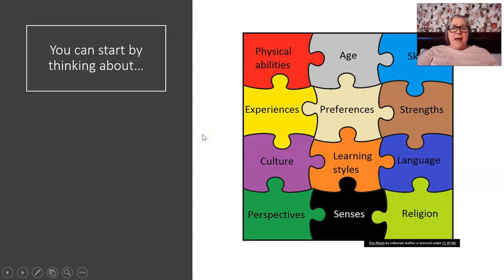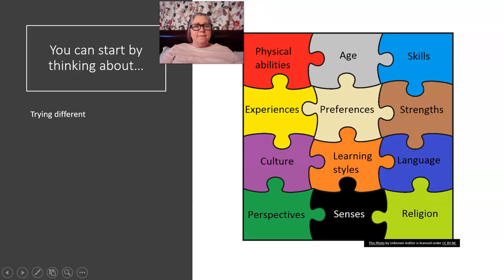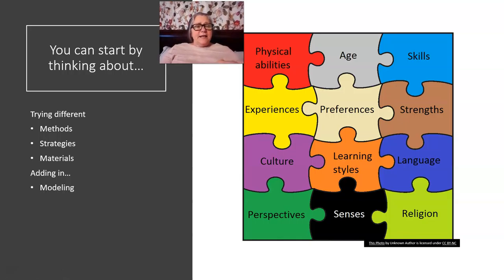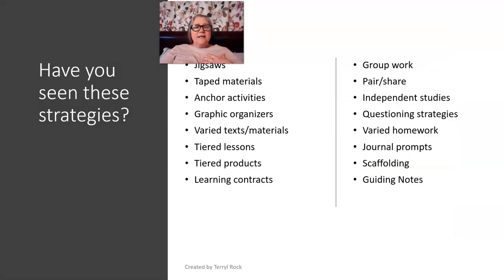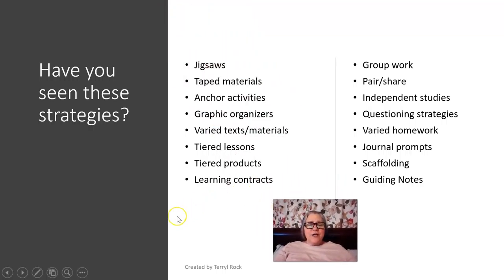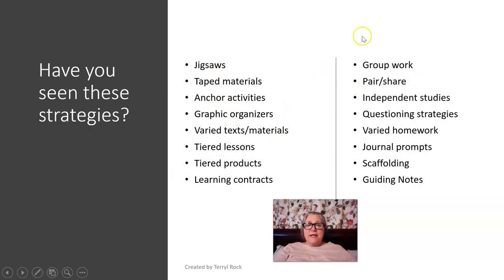You can start thinking about differentiation by just trying different methods and strategies, materials, then adding in some modeling, movement, art, music, and demonstrations. The idea is to just try something — do something different, think of a different approach. The worst thing you can do is teach it the exact same way. If students aren't getting it the way you're teaching it, they're not going to get it the next time if you keep teaching it that way.